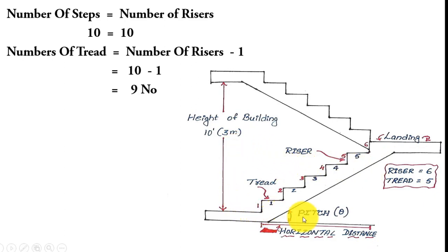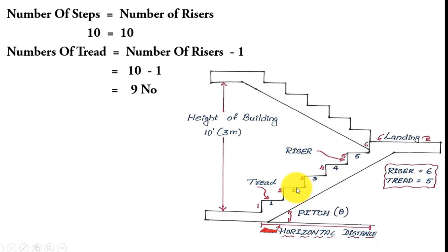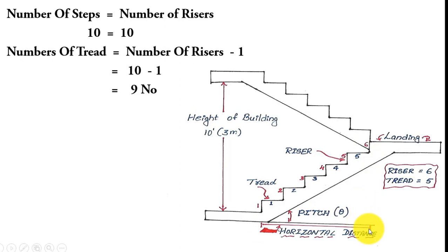In this figure you can see the complete section of the staircase. The height of the building is 10 feet (3 meters). The landing, riser, and pitch (theta) are all shown. The horizontal distance runs from the start point to the last step — this is called the total horizontal distance.